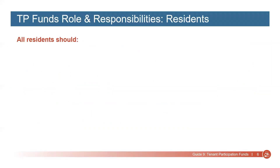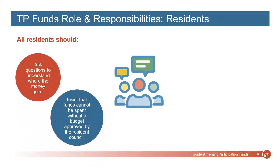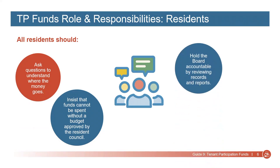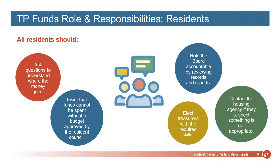All residents have important roles to play in ensuring TP Funds are properly managed. Residents should ask questions to understand where the funds go, insist that funds cannot be spent without a budget approved by the Resident Council, hold the Board accountable by reviewing records and reports, elect Treasurers with the required skills, and contact the Housing Agency if they suspect something is not appropriate.